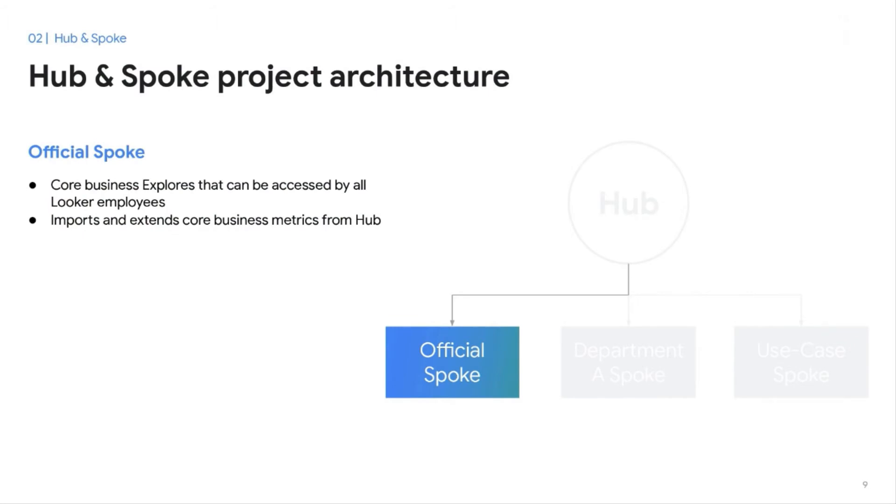The point of the Hub is to define business logic in one place and provide accurate and consistent information that all departments can reuse. The official Spoke is a project that has all of the core business explorers. These explorers can be accessed by all Looker employees and they contain metrics that are used company-wide. At Looker internally, this is where our core sales explorers live. These explorers contain fields that are reused across various departments such as total revenue or the classification of a current customer — fields that are used across customer success, engineering and product, and marketing to keep a pulse of the business.